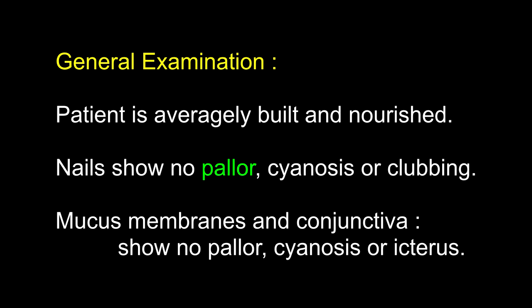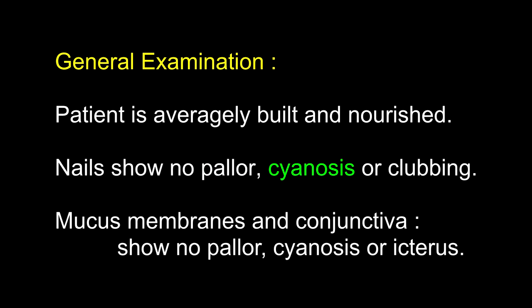Cyanosis is the bluish or violet discoloration of skin and mucous membranes due to an absolute increase of reduced hemoglobin to more than 5 g% in the blood of subcapillary venous plexuses under the skin. It is best seen in the cheeks, ears, lips, mucous membranes of the mouth, and nail beds. Why is cyanosis not seen in severely anemic patients? Because if total hemoglobin is less than 5 g%, cyanosis will never appear even if all hemoglobin is reduced.